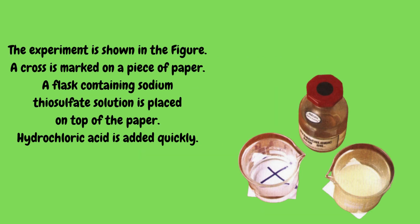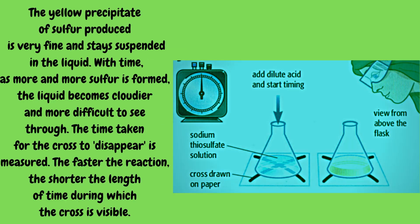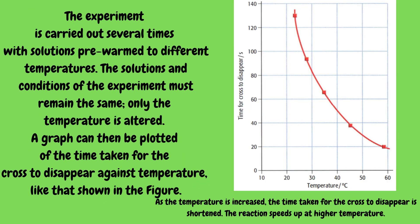The experiment is shown in the figure. A cross is marked on a piece of paper, and a flask containing sodium thiosulfate solution is placed on top of the paper. Hydrochloric acid is added quickly. The yellow precipitate of sulfur produced is very fine and stays suspended in the liquid. With time, as more and more sulfur is formed, the liquid becomes cloudier and more difficult to see through. The time taken for the cross to disappear is measured — the faster the reaction, the shorter the time during which the cross is visible.